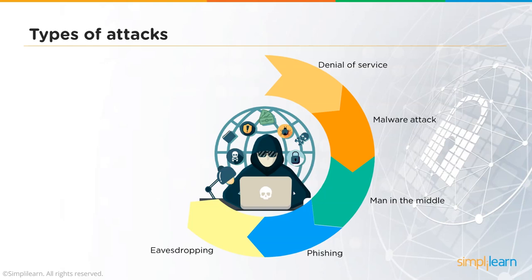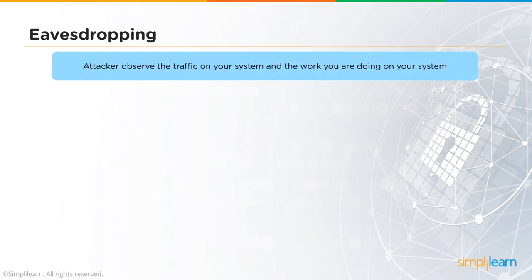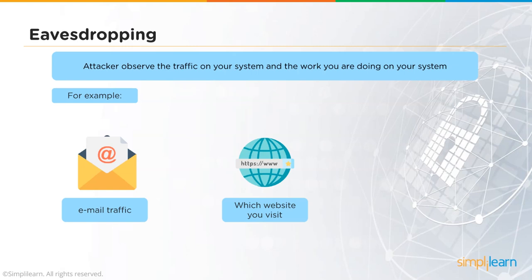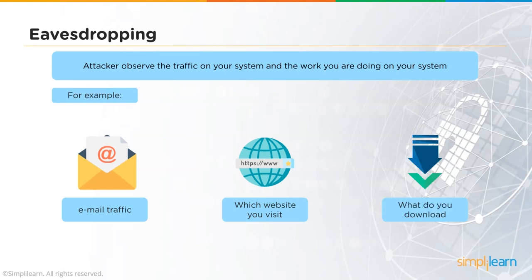Eavesdropping involves observing traffic on a system — such as email traffic, websites visited, or downloads. It essentially involves sniffing attacks on networks, where data packets flowing between endpoints and servers are captured and observed.